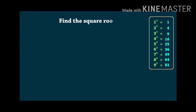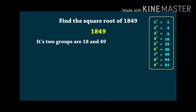Let us take one more example. Find the square root of 1849. Its two groups are 18 and 49.